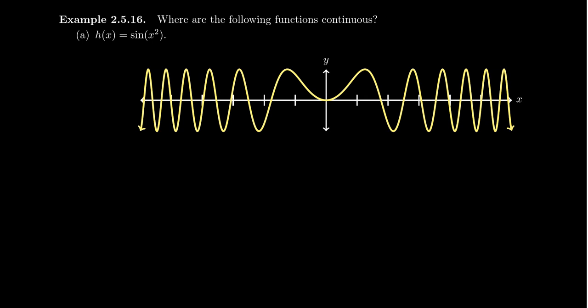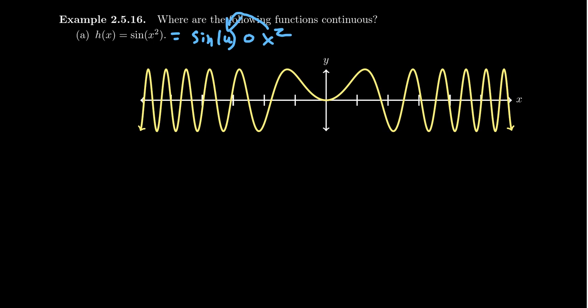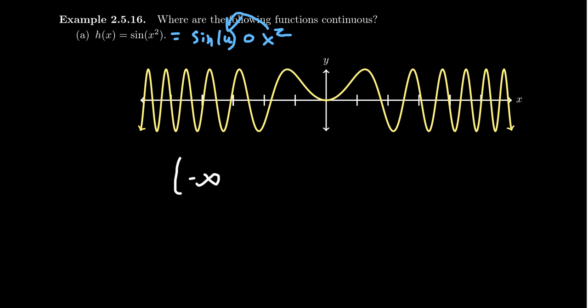To see an example, we might ask where the following functions are continuous. Take f of x equals sine of x squared. This function can be decomposed as sine of u composed with x squared — if you put x squared inside of sine, that's where this function comes from. You'll notice that x squared is a continuous function because it's a polynomial, and sine of u is continuous on all real numbers. Therefore, this function will be continuous on all real numbers.